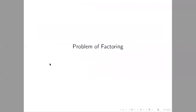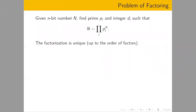So what's the problem of factoring? Suppose we have a big number capital N, which has n bits. The problem of factoring is to find its prime decomposition — its factorization into prime powers. This factorization for integers is known to be unique up to the order of factors, though there can be different decompositions with the same primes.